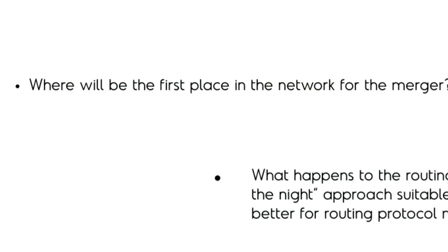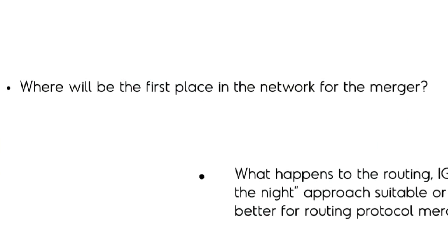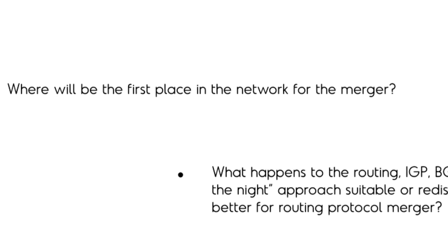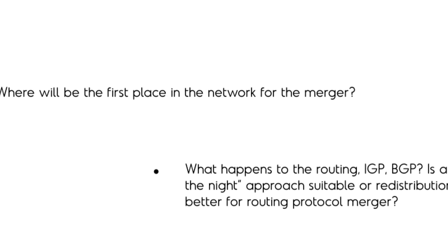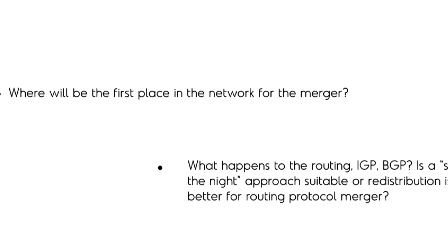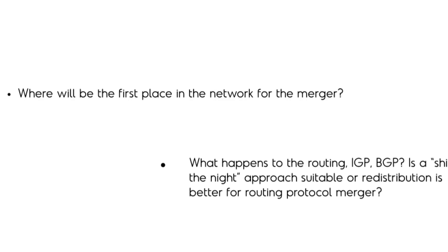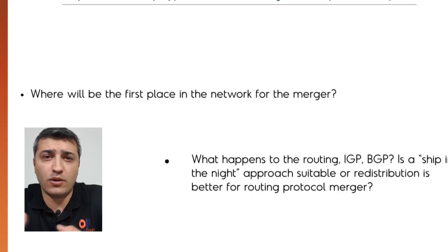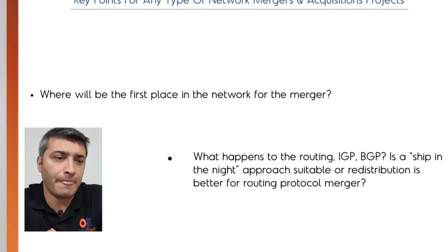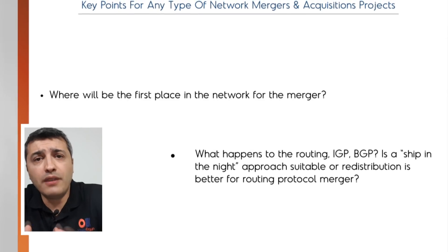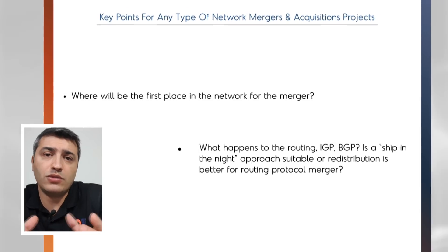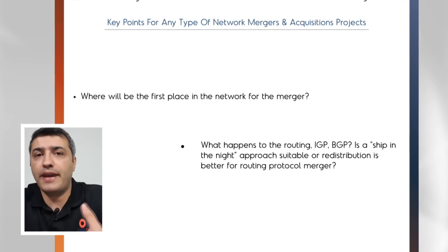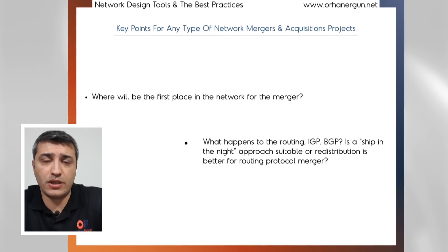Information gathering for brownfield networks is not different from greenfield. Key questions for network merger and acquisition include: where will be the first point or first module for the merged network? If you are acquiring another company, where is the first point you need to think about — is it the local area network, the data center, the internet, or how you will connect the two networks?